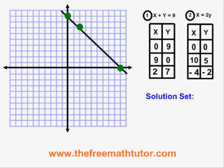For equation 2, the point 0, 0 is here at the origin. And the point negative 4, negative 2 is here. Putting this line on the graph, it looks like this.